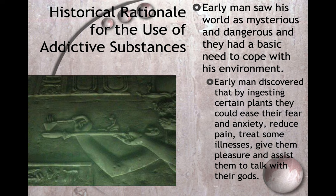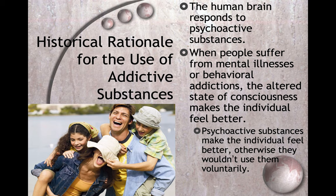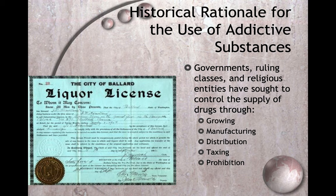Early man saw his world as mysterious and dangerous and had a basic need to cope with his environment. Early man discovered that by ingesting certain plants, they could ease their fear and anxiety, reduce their pain, treat some illnesses, give them pleasure, and assist them to talk with their gods. The human brain responds to psychoactive substances. When people suffer from mental illnesses or behavioral addictions, the altered state of consciousness makes the individual feel better — otherwise they would not use them voluntarily. Governments, ruling classes, and religious entities have sought to control the supply of drugs through growing, manufacturing, distribution, taxing, and prohibition.